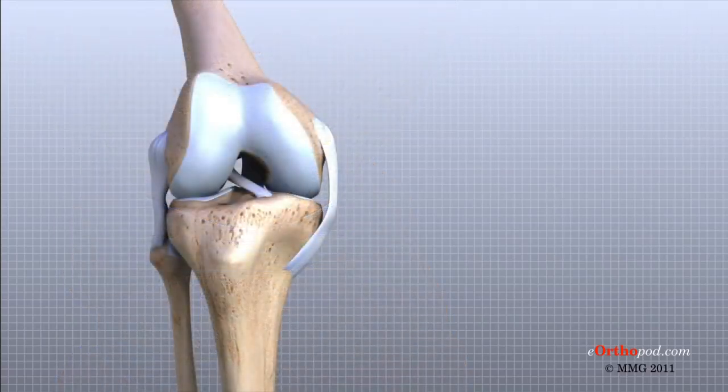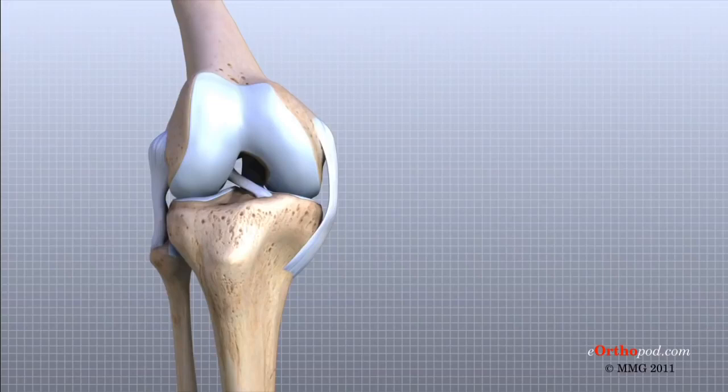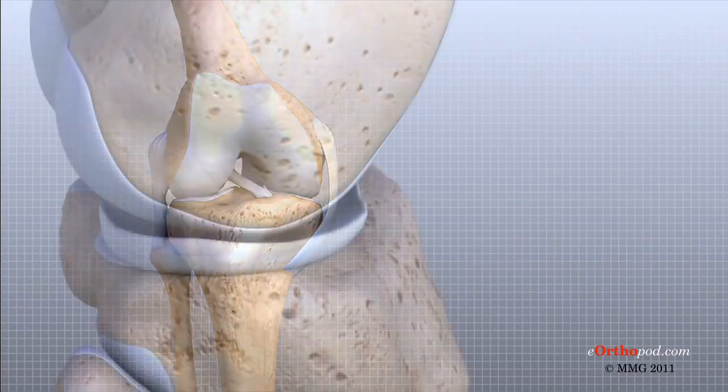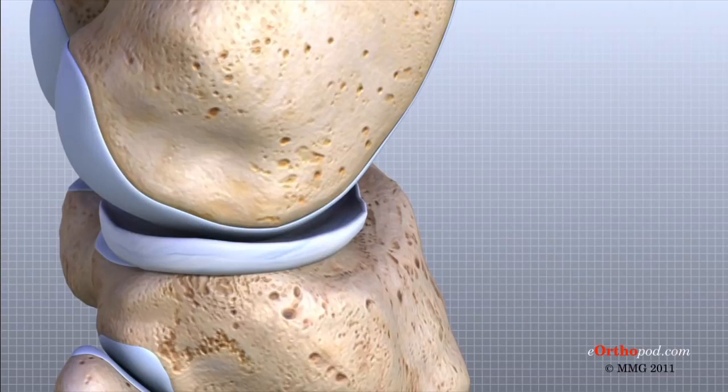Taken all together, the ligaments of the knee are the most important structures that stabilize the joint. Remember, ligaments connect bones to bones. Without strong, tight ligaments to connect the femur to the tibia, the knee joint would be too loose. Unlike other joints in the body, the knee joint lacks a stable, bony configuration.